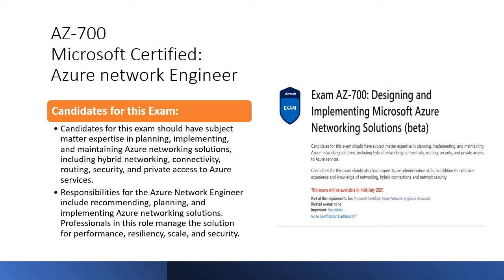You should understand how to design highly available, secure, and resilient networking solutions between your on-premises network and Azure. You should be able to work with DevOps engineers, application developers, and cloud solution architects. You should also have administration skills like writing ARM templates and PowerShell. Having AZ-104 will help you in this certification as well.